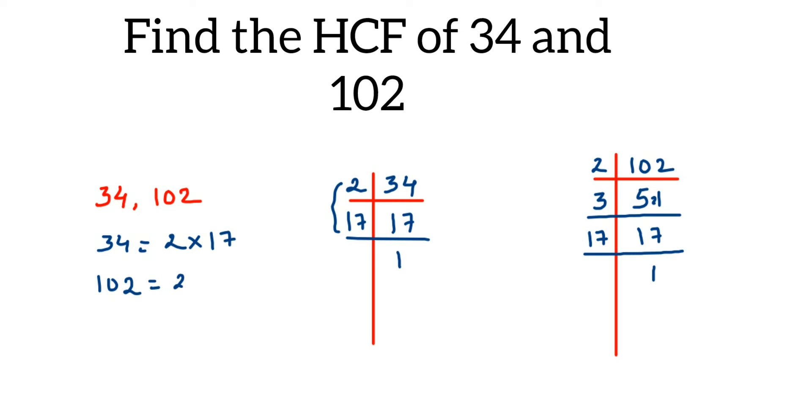And here we have 102, which is equal to 2 into 3 into 17. So when you're doing this division, you should take only prime numbers. Remember that.